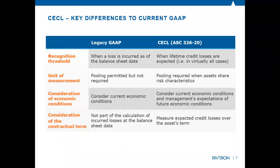The big change that we've heard a lot about is moving from an incurred loss model to an expected loss model. A lot of people in the banking and financial institution world — it was more of an expected incurred model. As a loss became highly probable, that's when you incurred it. Maybe talk a little bit about what that difference looks like now versus previously.